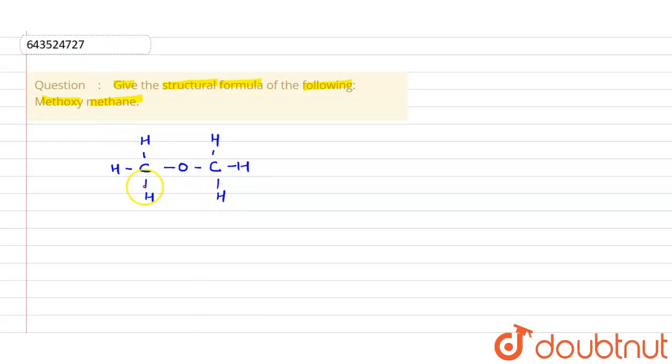This will be the main chain - counting will start here - and this becomes your substituent. So this will be called methoxy, and this one carbon is methane.